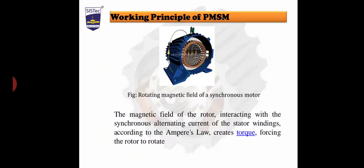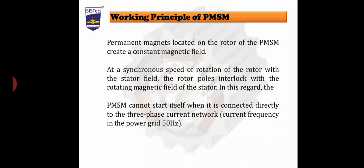The rotor's magnetic field interacts with the synchronous alternating current of the stator winding and, according to Ampere's law, creates torque, forcing the rotor to rotate. The permanent magnets located on the rotor of the permanent magnet synchronous machine create a constant magnetic field. At synchronous speed, the rotor poles interlock with the rotating magnetic field of the stator — this is called the synchronization condition.